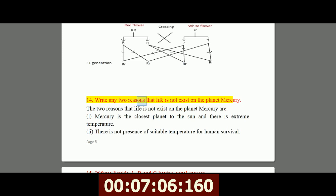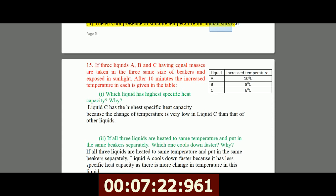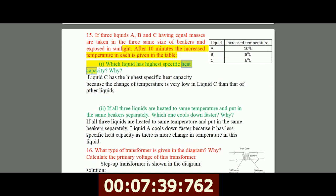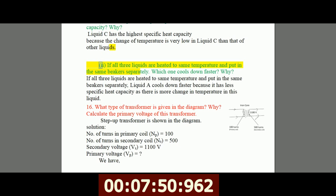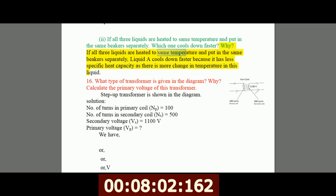14. Write any two reasons that life does not exist on the planet Mercury. The two reasons that life does not exist on the planet Mercury are: I, Mercury is the closest planet to the sun and there is extreme temperature. II, there is not presence of suitable temperature for human survival. 15. If three liquids A, B, and C having equal masses are taken in three same size beakers and exposed in sunlight. After 10 minutes the increased temperature in each is given in the table. I, which liquid has highest specific heat capacity? Why? Liquid C has the highest specific heat capacity because the change of temperature is very low in liquid C than that of other liquids. II, if all three liquids are heated to same temperature and put in the same beakers separately, which one cools down faster? Why? Liquid A cools down faster because it has less specific heat capacity as there is more change in temperature in this liquid.